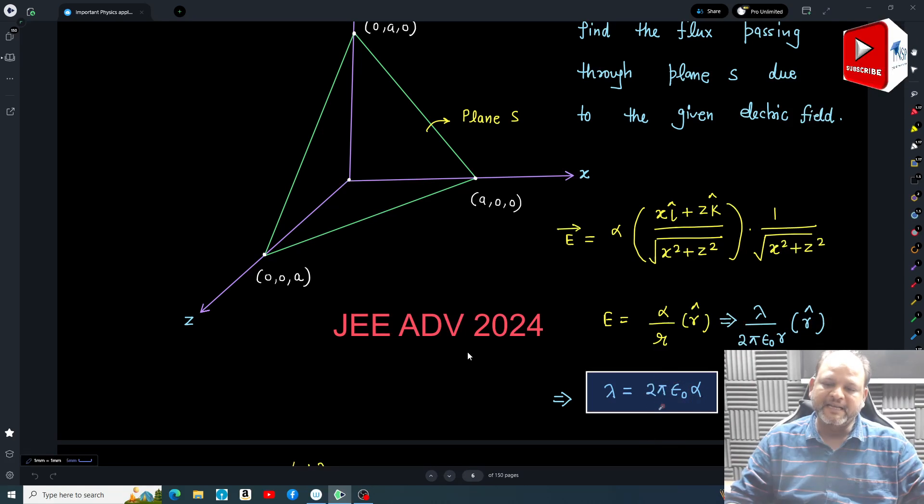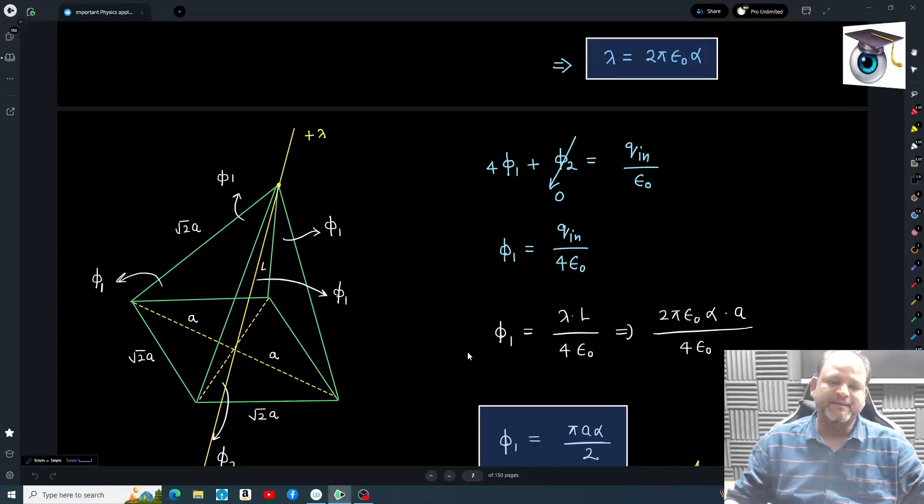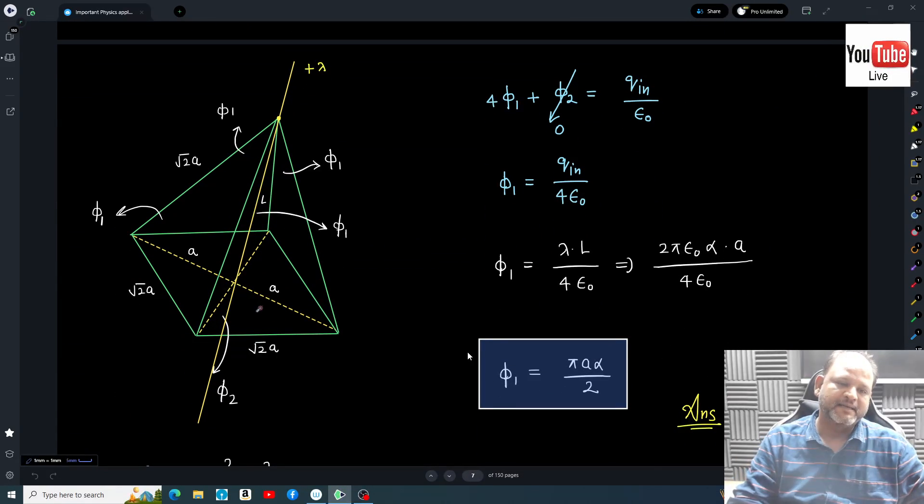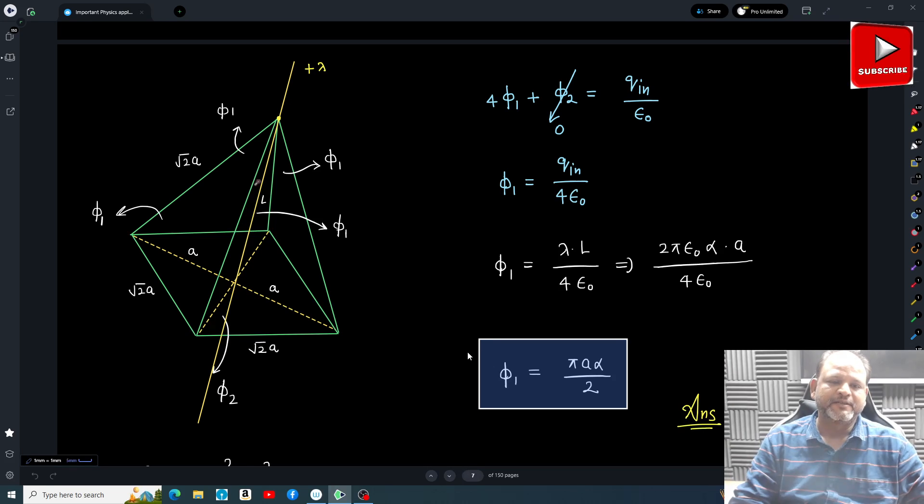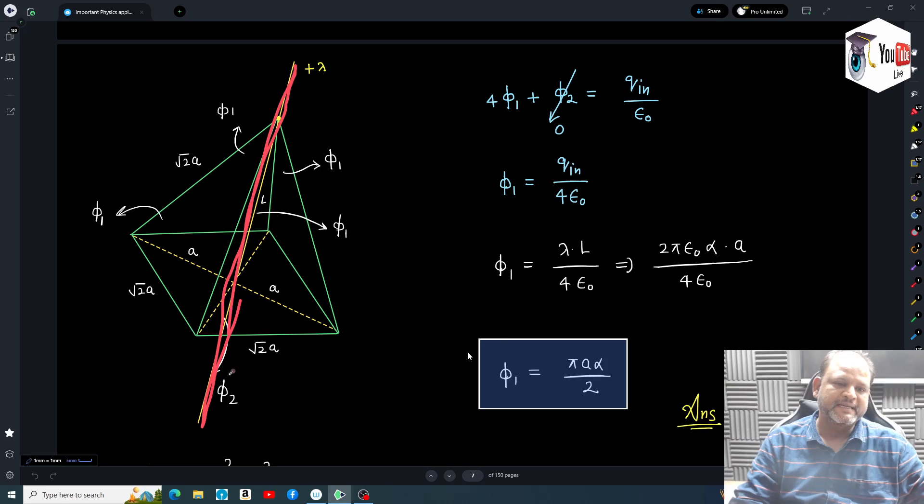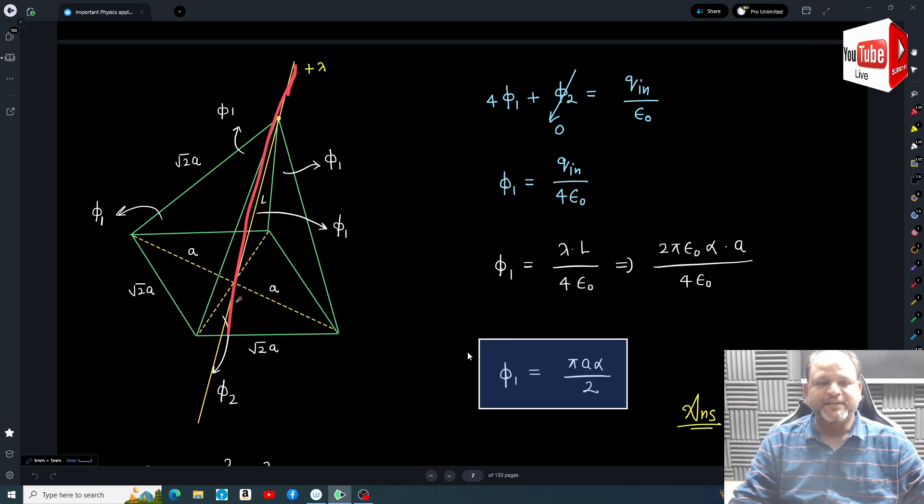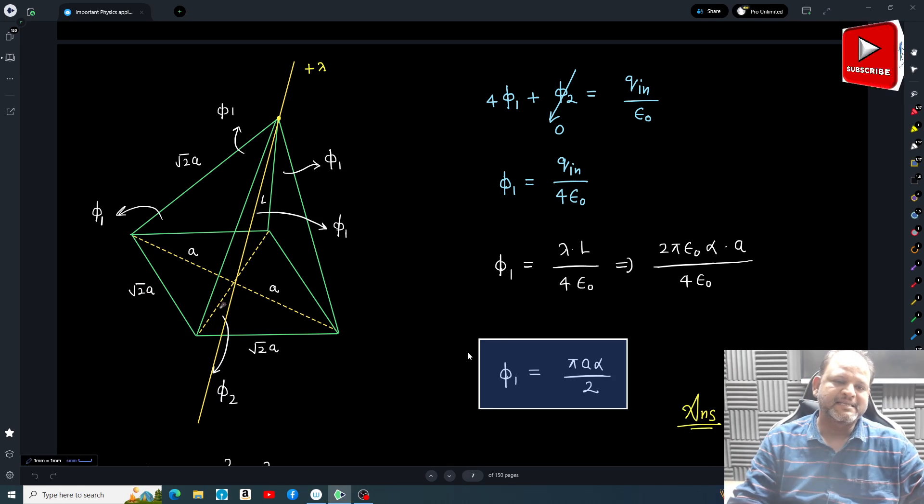Now let's place that wire inside this pyramid. So you can see this wire is like this, along the y-axis. Now here again I can say that field due to this is radial, so φ₂ is again going to be zero in this situation.